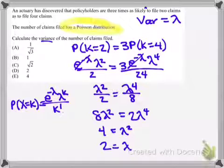Which means I have found the missing parameter for my Poisson distribution. But more importantly, I have now answered the question because, as we said before, in a Poisson distribution, the lambda is the variance as well. Therefore, our answer to this question would be D, 2.